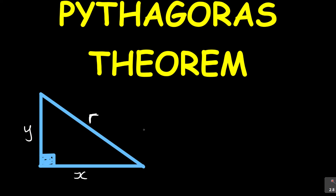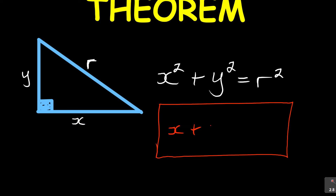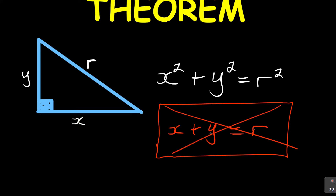What did Pythagoras say? He said if you take the two sides, X squared plus Y squared, the sum of the squares of the smaller sides is equal to the square of the longest side. Students usually write X plus Y equals R and call it the Pythagoras theorem — this is wrong. It is not X plus Y, but X squared plus Y squared is equal to R squared. We need to square the sides.